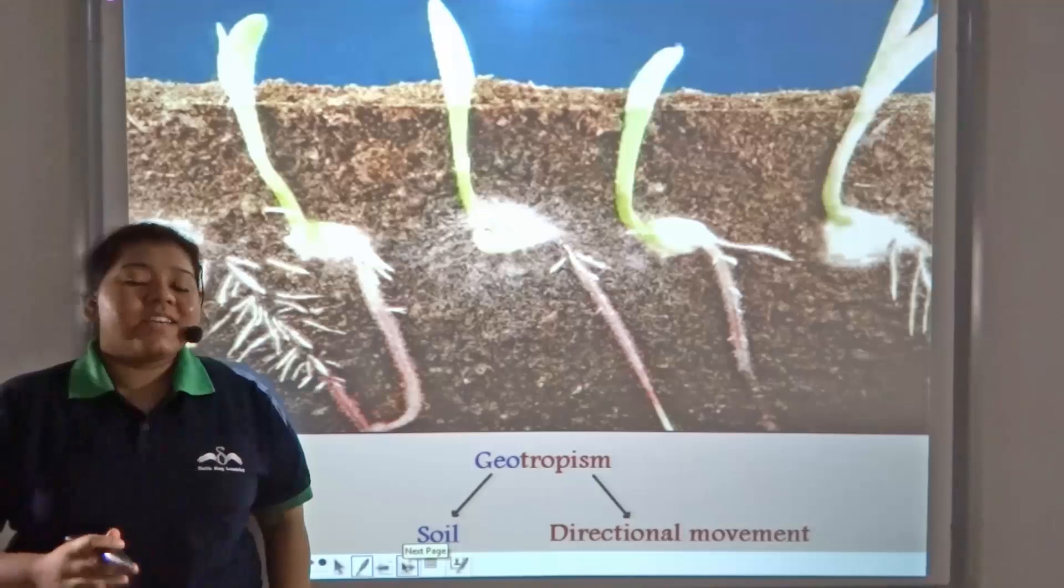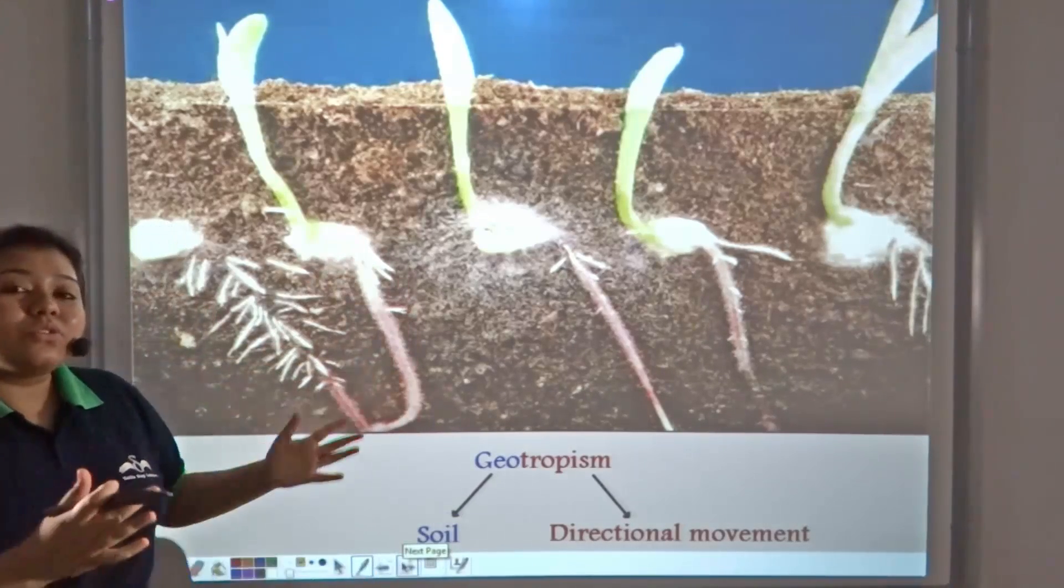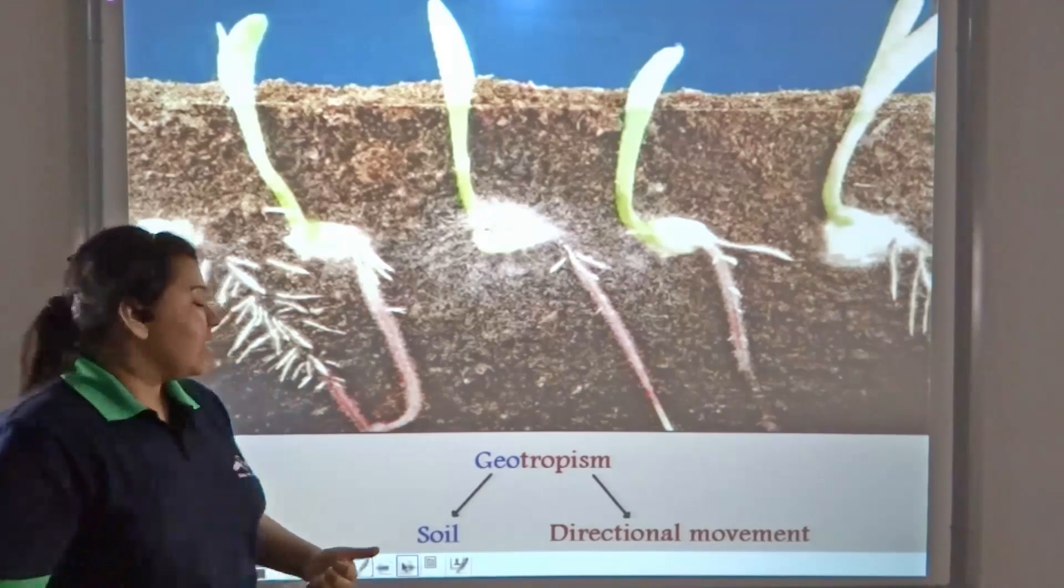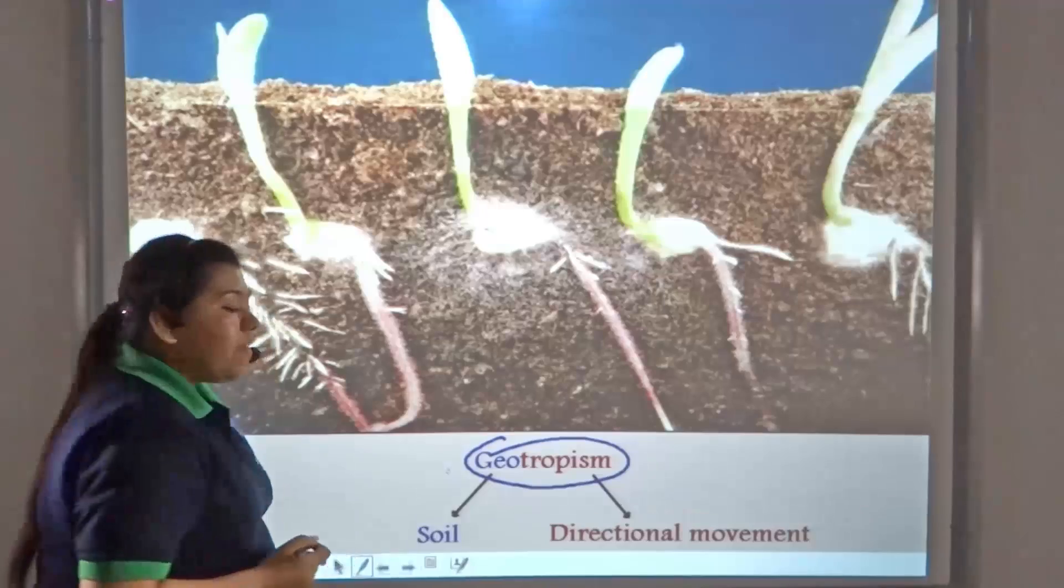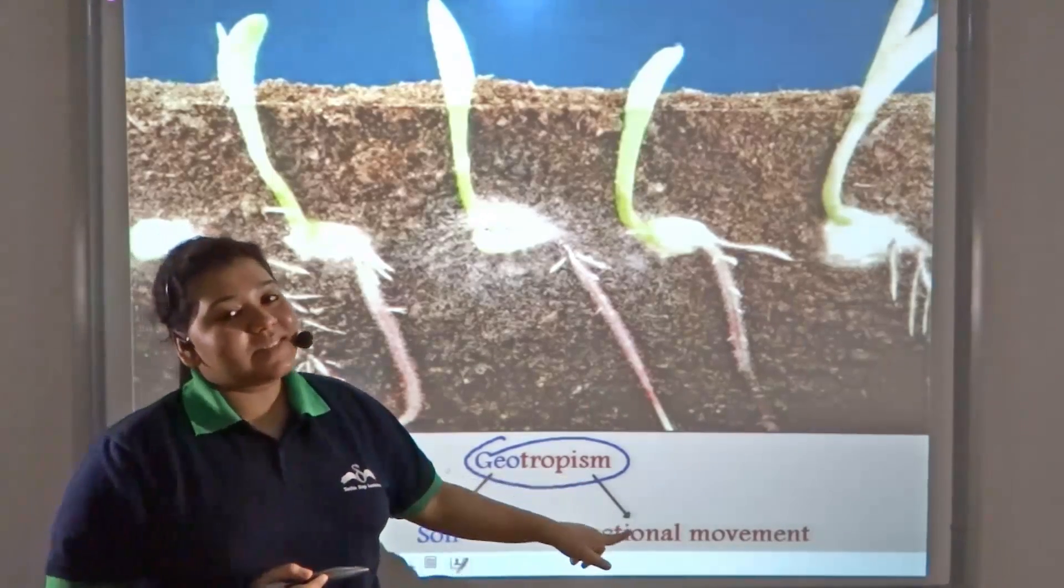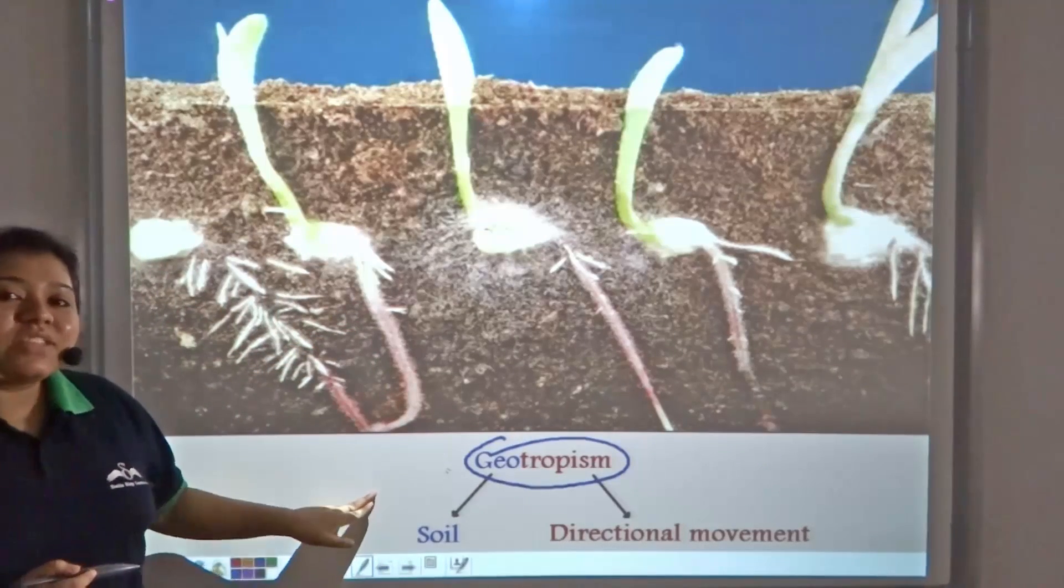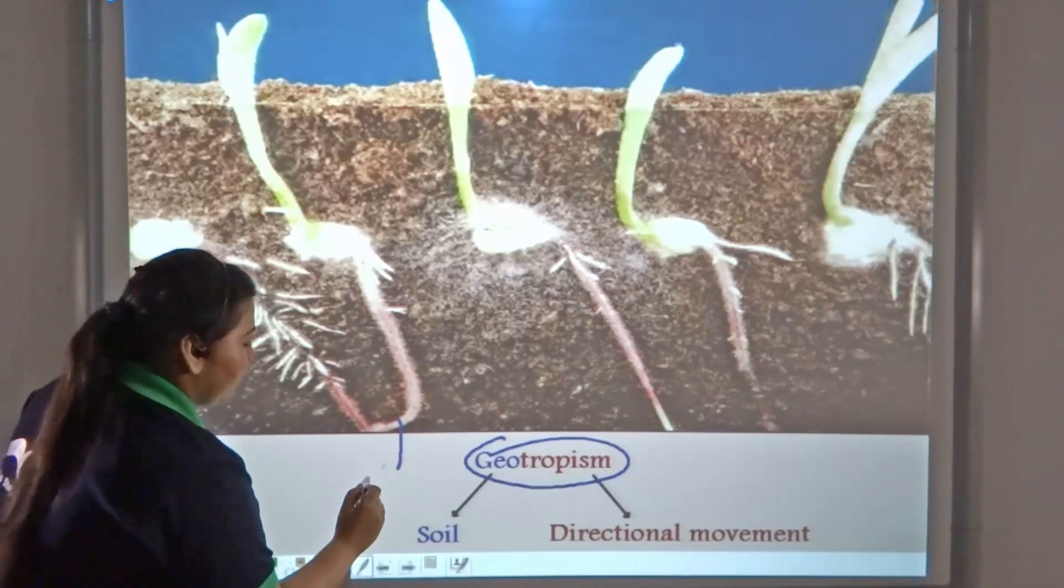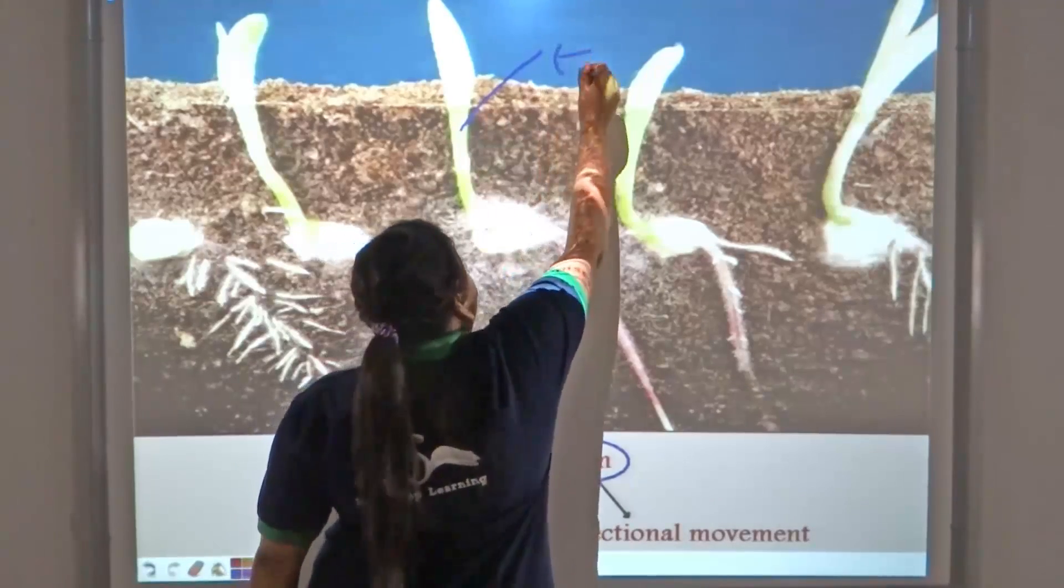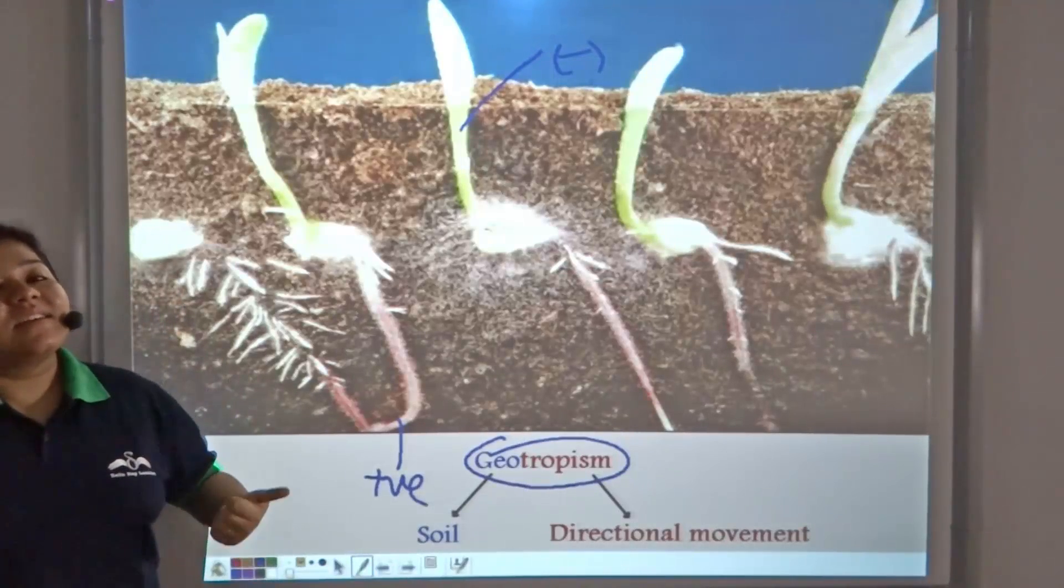Just like shoots grow towards the light source, roots grow towards the soil. This directional movement is known as geotropism, where geo means soil and tropism means directional movement. Roots are positively geotropic, whereas shoots are negatively geotropic.